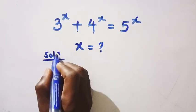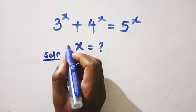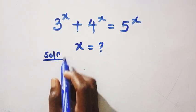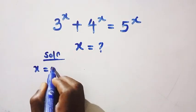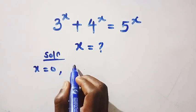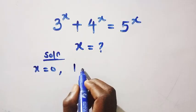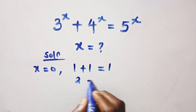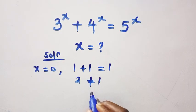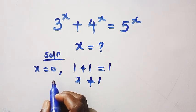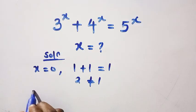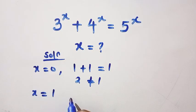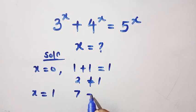Considering the solution, let's start with some guesses. Suppose x equals 0 — we get 1 plus 1 equals 1, but 2 is not equal to 1, so x cannot be 0. If we test x equals 1, we get 7, which is not equal to 5.